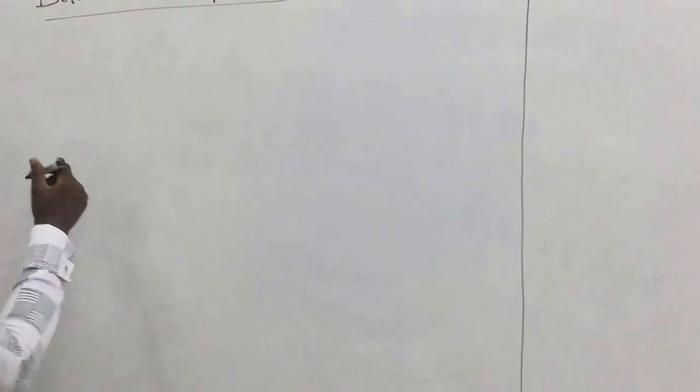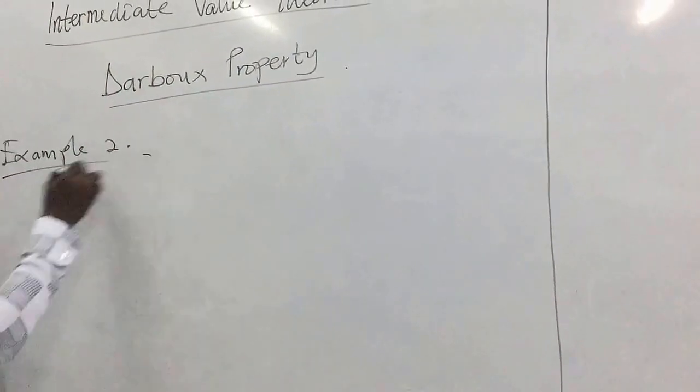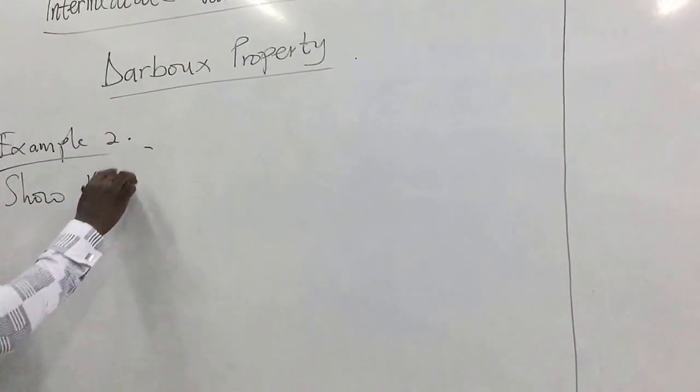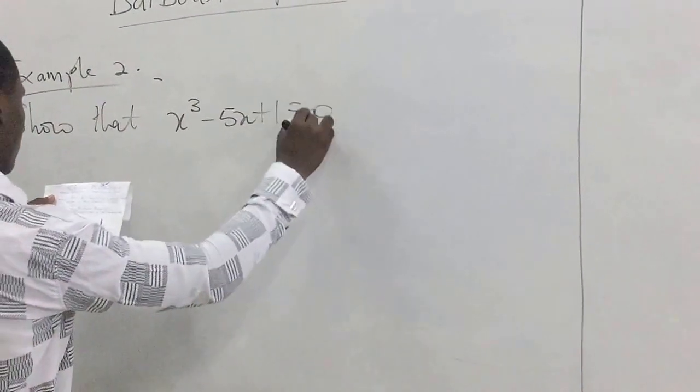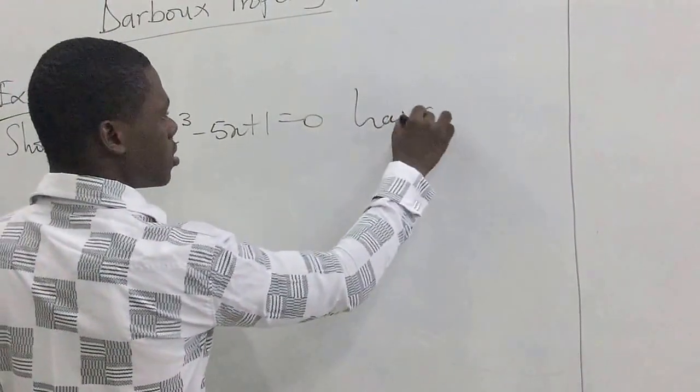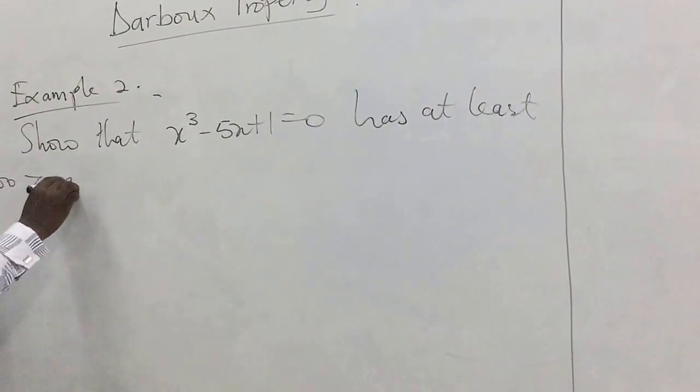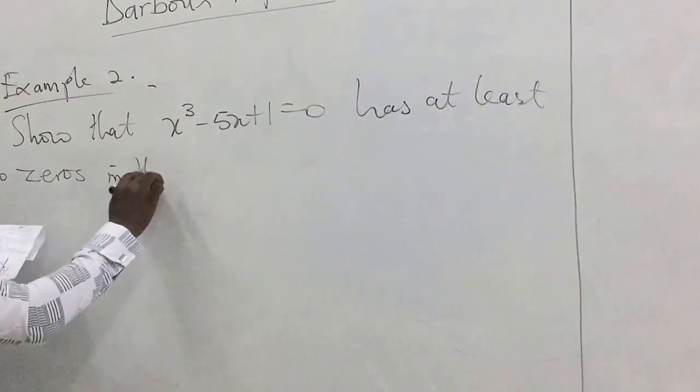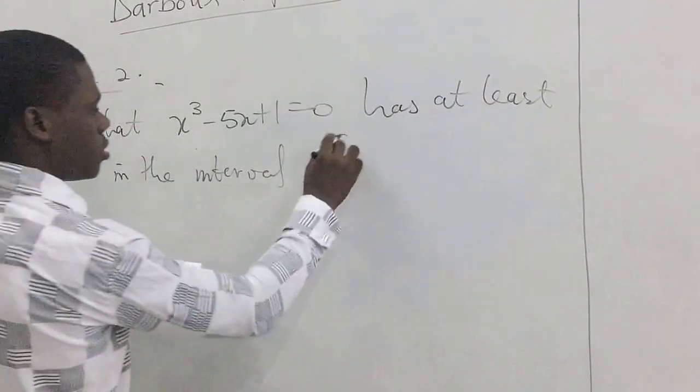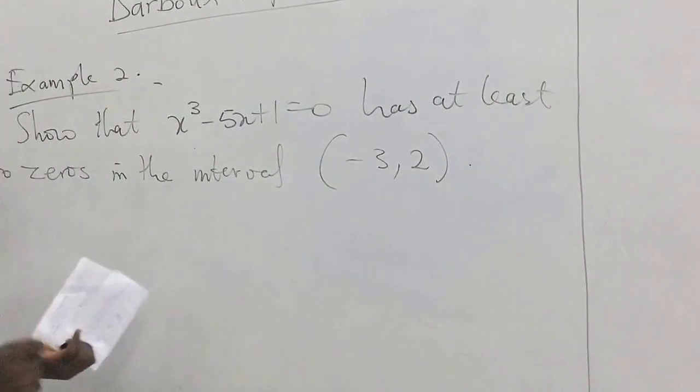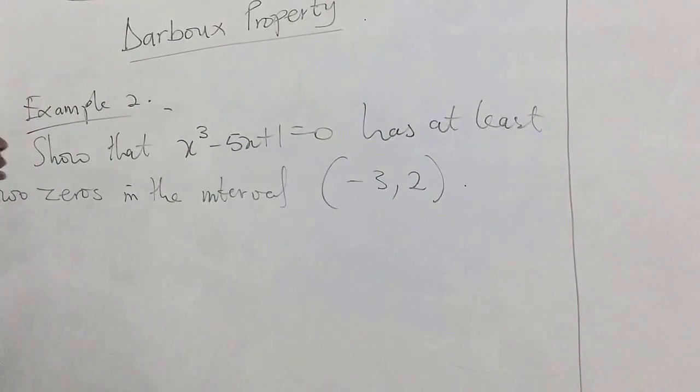Example 2: Show that x³ - 5x + 1 = 0 has at least two zeros in the interval (-3, 2). Showing that this particular equation has at least two zeros means we are looking at two or more solutions in this interval.